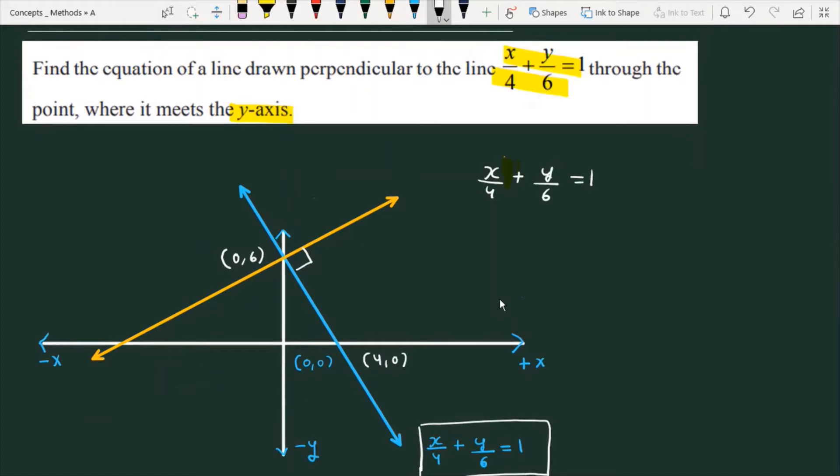The given line is in intercept form, which is x/a + y/b = 1. While comparing, you will get the value of a = 4 and the value of b = 6.